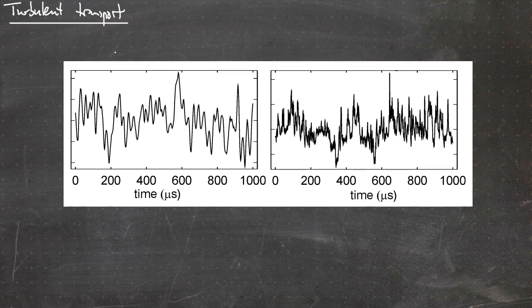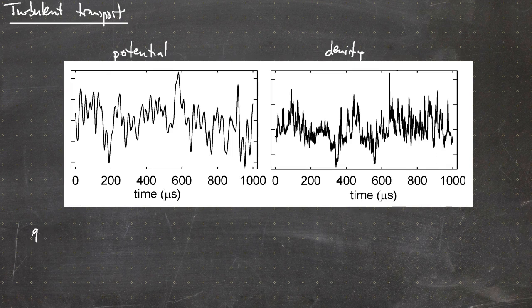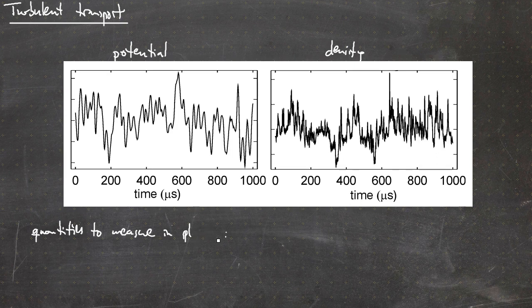On this slide I have shown you two time traces from measurements of a plasma. On the left hand side this is the plasma potential, and on the right hand side this is the plasma density, both measured by means of Langmuir probes. You can see how both quantities are varying over time — measured at a fixed position — so they are fluctuating. These are basically the quantities we want to measure in plasmas, because they are relatively easy to measure and allow us to get quite a decent amount of information.